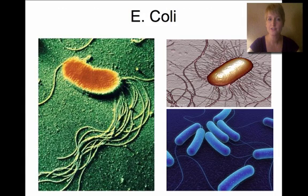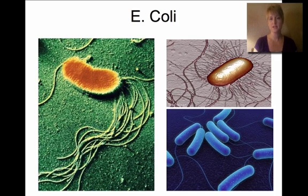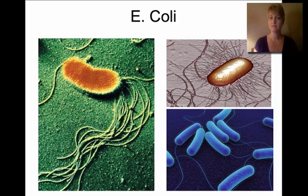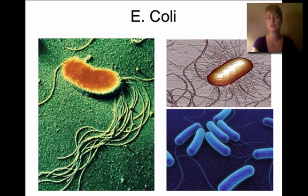E. coli is a rod-shaped bacteria and you can see a very well-defined flagellum in the picture. E. coli actually lives in our gut and helps us digest food, providing us with vitamin K. However, E. coli can also be very destructive if we ingest it — we often see E. coli outbreaks in hamburgers that aren't cooked well enough. One way to avoid an outbreak is to make sure hamburgers are cooked all the way through.